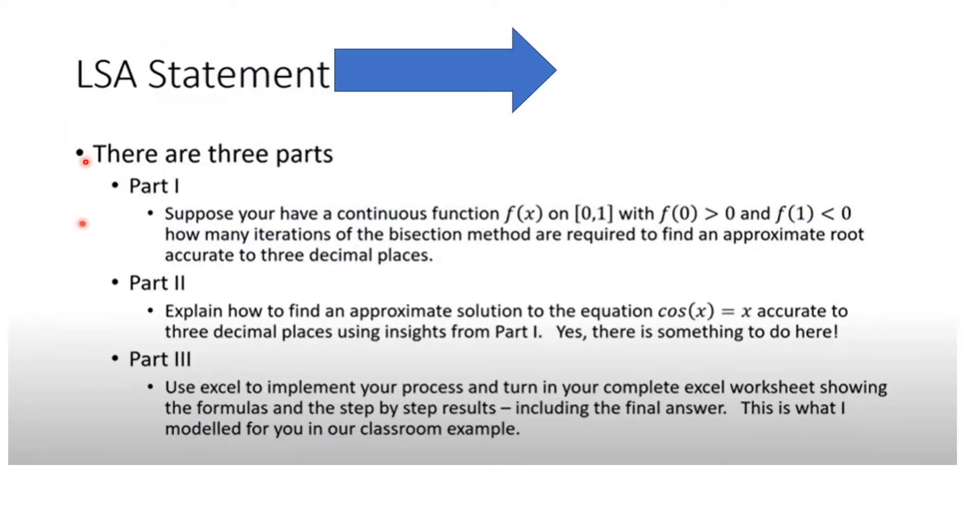So here is the LSA statement. There are three parts. Part 1 says, suppose you have a continuous function f(x) on the closed interval [0, 1], and f(0) > 0 and f(1) < 0. How many iterations of the bisection method are required to find an approximate root accurate to three decimal places? Part 2 asks you to explain how to find an approximate solution to the equation cos(x) = x accurate to three decimal places using insights from Part 1. And yes, there is something to do here, and we'll talk about that later.